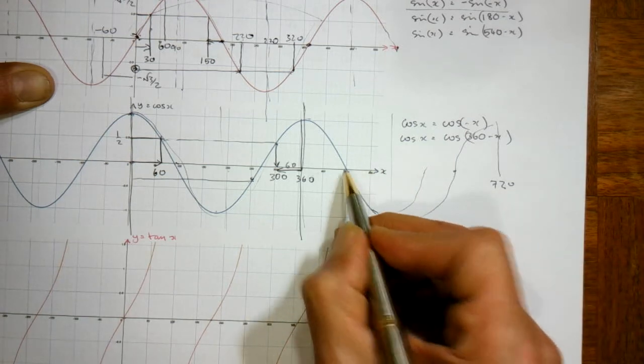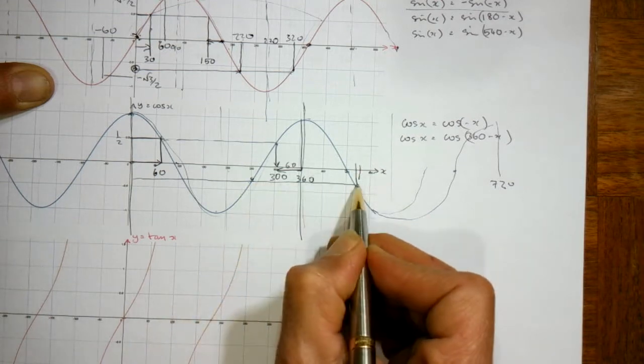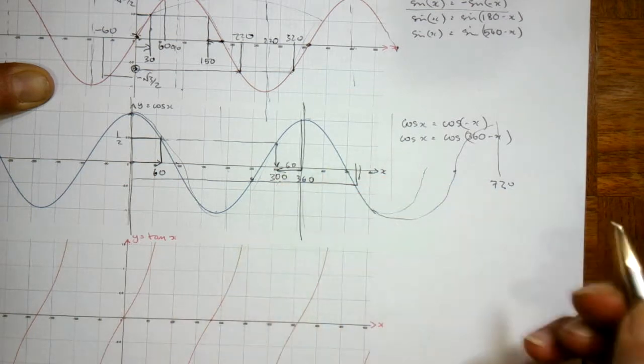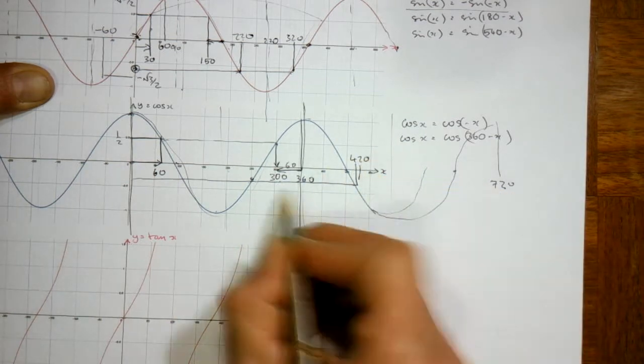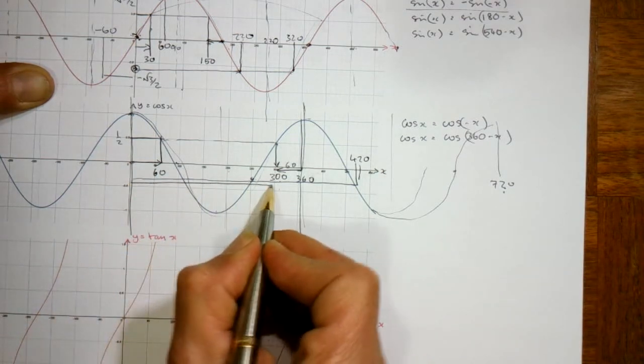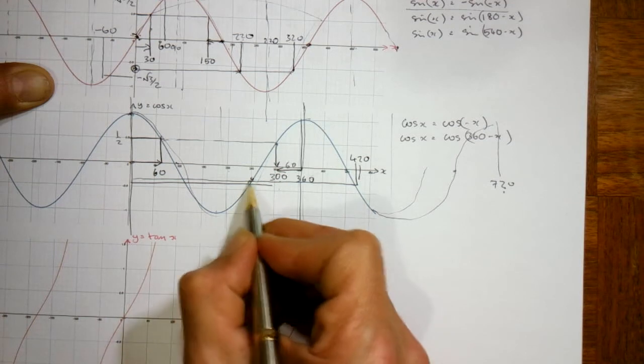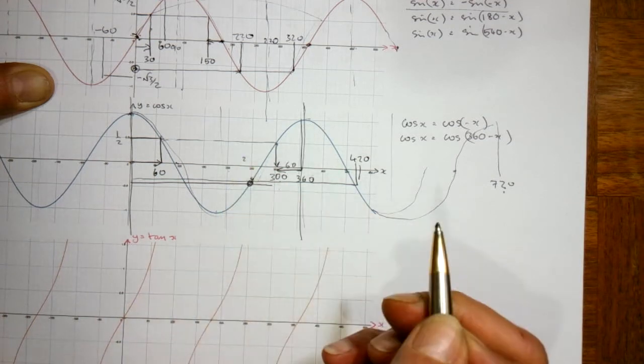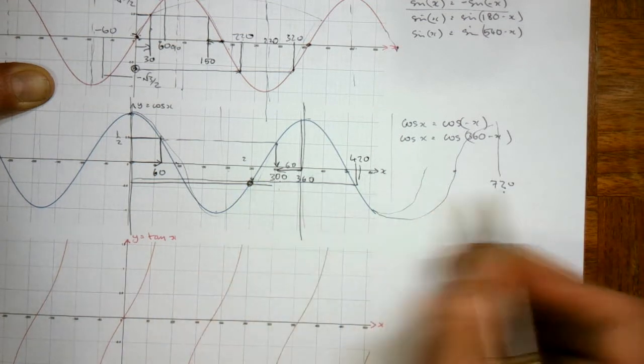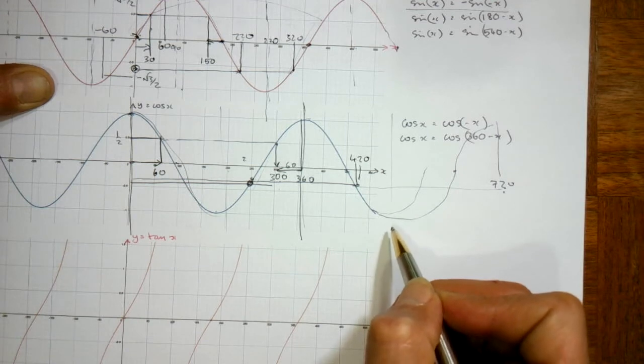Well, there's 450. 470 is about here. Then look, we've got the same y value on that bit of the graph. Because 300 and 420 add up to 720. The distance that we've gone across there to get to our 300 degree line is the same as the distance back from 720.